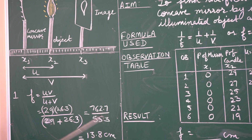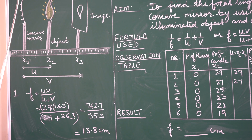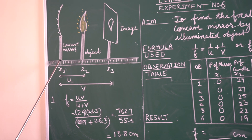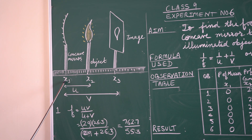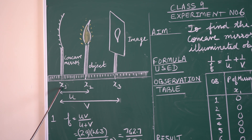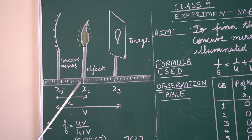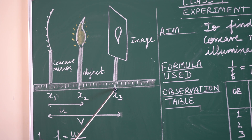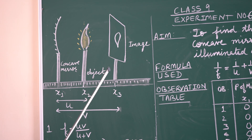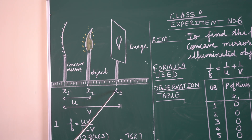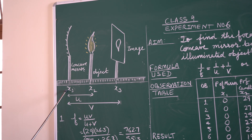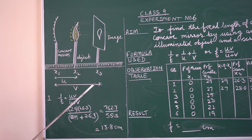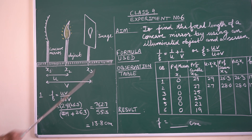Now let me explain how we reached these positions using the diagram. This is the position of the concave mirror in the diagram, indicated by x1. The candle has been placed at position x2, and the screen where the image is taken is represented by x3. So x2 minus x1 is the object distance u, and x3 minus x1 is the image distance v, as indicated in the diagram.